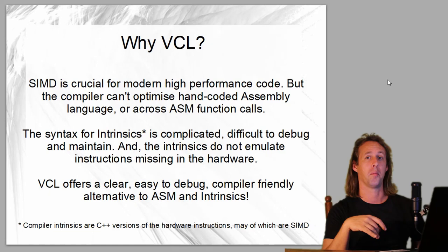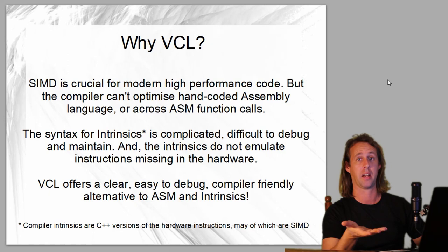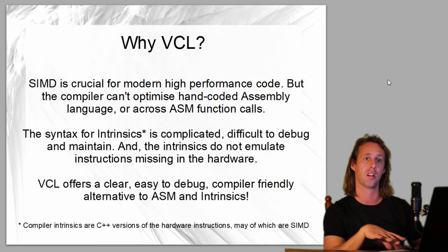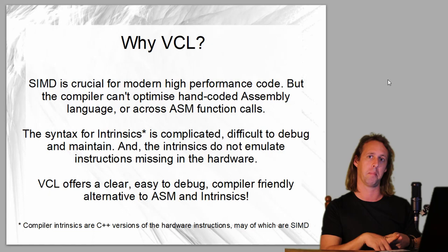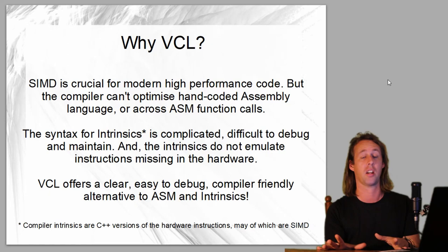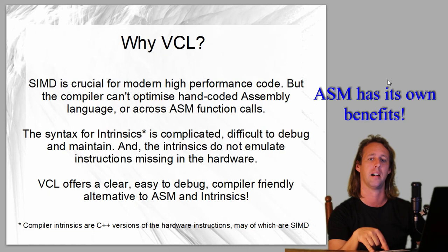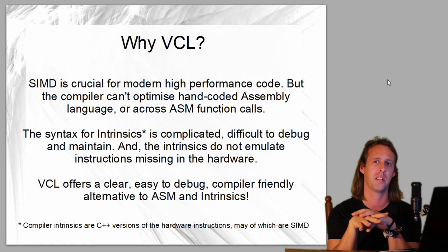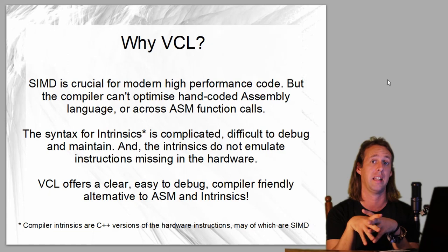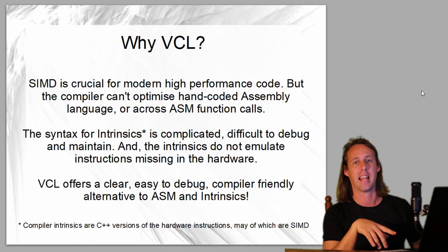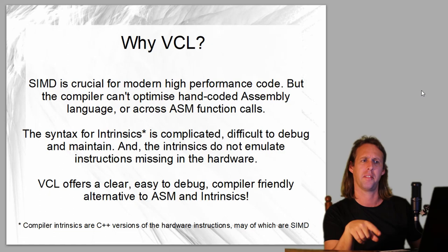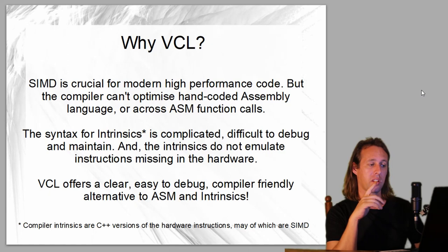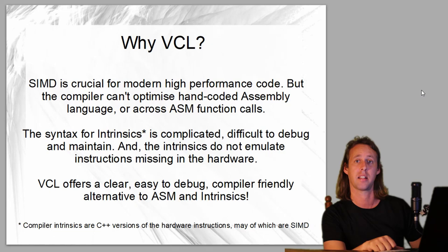So why VCL, why the Vector Class Library? SIMD is crucial to modern high-performance code, and there are a couple of ways to do SIMD. You can use assembly, but the trouble is the C++ compiler can't optimize across your function calls - it can't inline your hand-coded assembly, and it won't optimize your assembly code at all. Another option is compiler intrinsics, but the trouble with intrinsics is that the syntax is really quite complicated and fiddly, and difficult to read and maintain. So the VCL offers a third alternative - it's easy to debug and maintain, easy to read, and compiler-friendly, so your functions will still be optimized where possible.